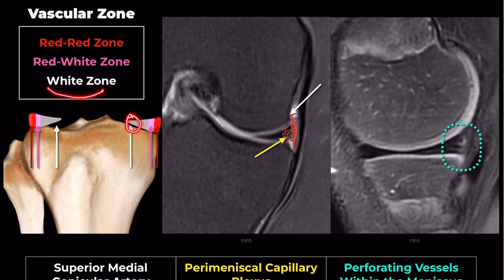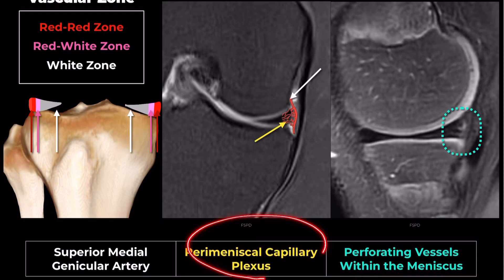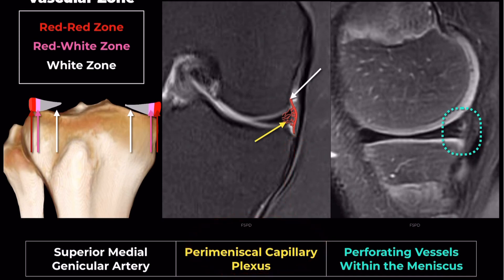The red zone of the meniscus receives its blood supply from the surrounding perimeniscal plexus, rendering it more amenable to repair in case of a tear.